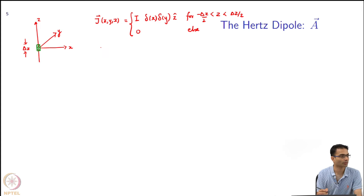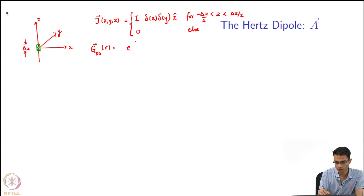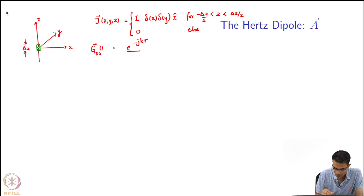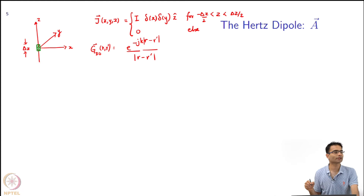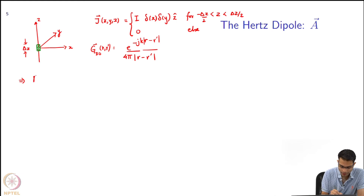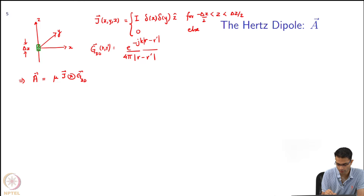Since this is a 3D problem, we need the 3D Green's function. The Green's function in 3D is e^(-jk|r - r'|) / (4π|r - r'|), including the 4π normalization factor for the outgoing wave. From here we can write down A for the Hertz dipole as the convolution of J and G_3D.